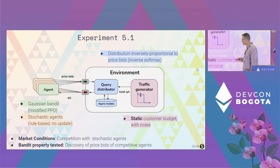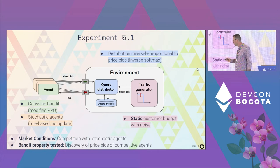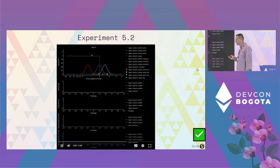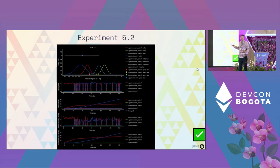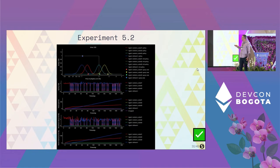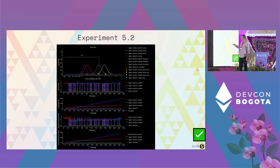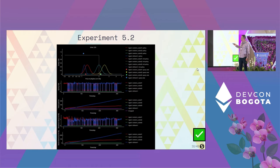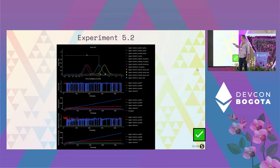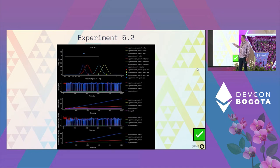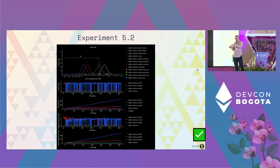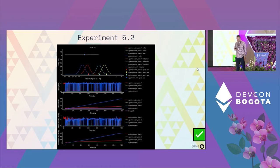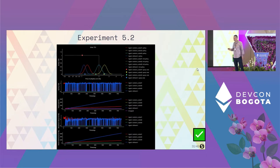We also test against stochastic agents — modeled as Gaussians that don't update. We observe similar behavior: our bandit agent moves slightly below their distribution and tries to capture the market. The agent can still discover and undercut stochastic competitors, and the property is verified.